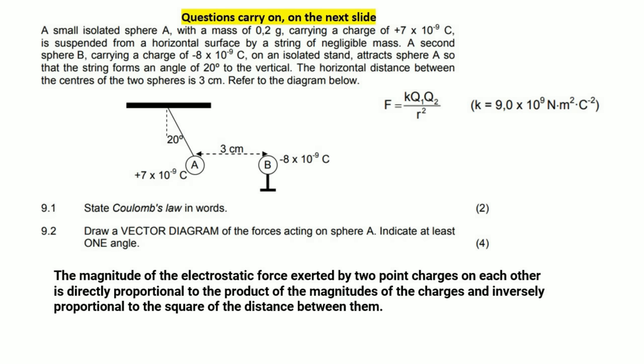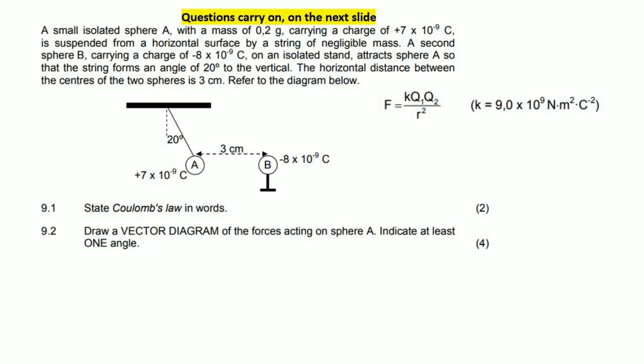Next question. Draw a vector diagram of the forces acting on sphere A, indicate at least one angle. Now why are they telling us to indicate at least one angle? That sounds scary. When they say vector diagram, you don't really see it too much, but you can think of it as free body diagram. So we'll just do free body diagram.